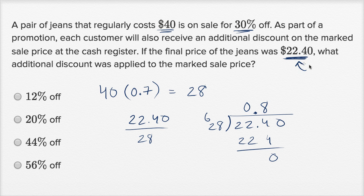If this is 80% of this, then the additional discount that was taken is going to be 20%. Because once you take 30% off, you would expect to pay $28, but you only paid 80% of that. So they took off another 20%. If you take off 20%, then you're going to pay 80% of the price.